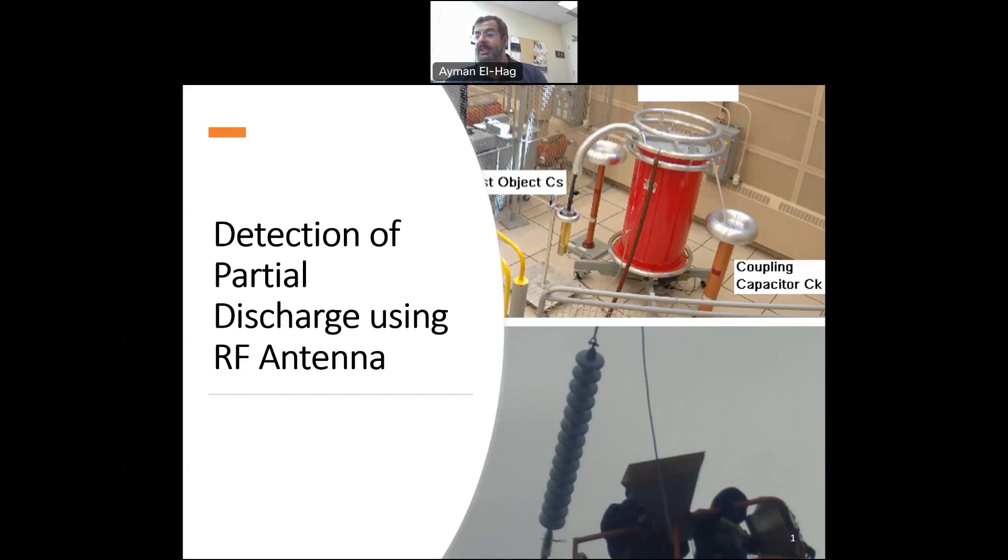However, this technique is intrusive and can only be used if you are inside the lab. Now if you are in the field and you want to detect partial discharge, you cannot have this setup, then you have to use a non-intrusive method. One of them is to use the RF antenna to detect the partial discharge.